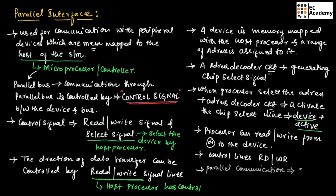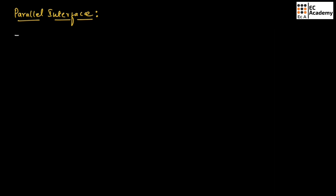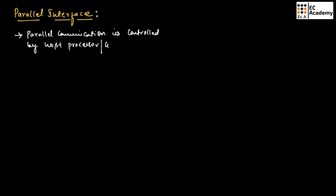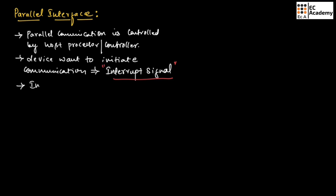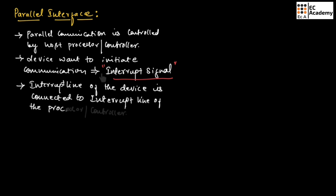For parallel communication, strict timing signals are followed. Parallel communication is controlled by the host processor or controller. But if a device wants to initiate communication, it can inform the processor through an interrupt signal. The interrupt line of the device is directly connected to the interrupt line of the processor or controller.